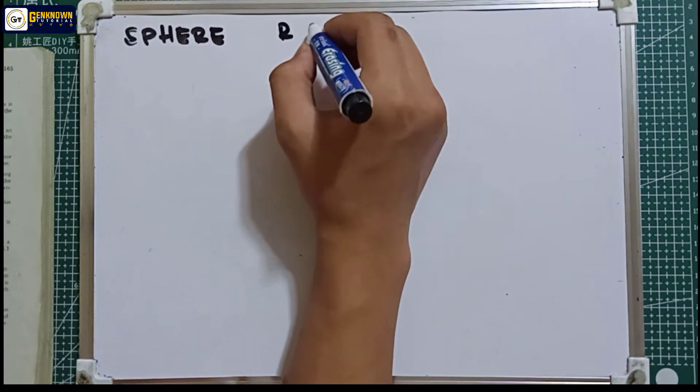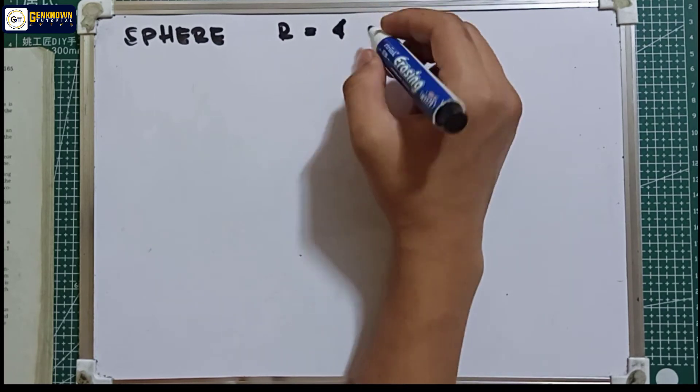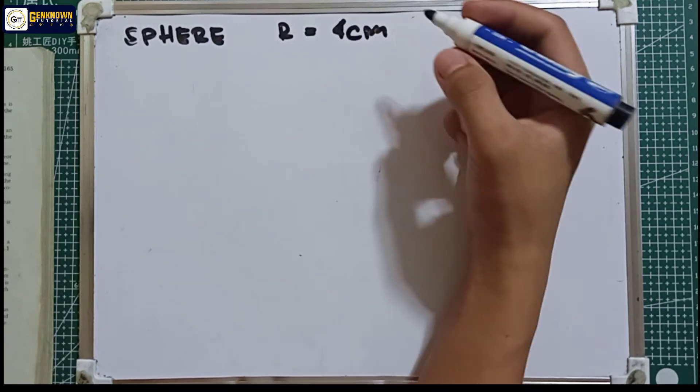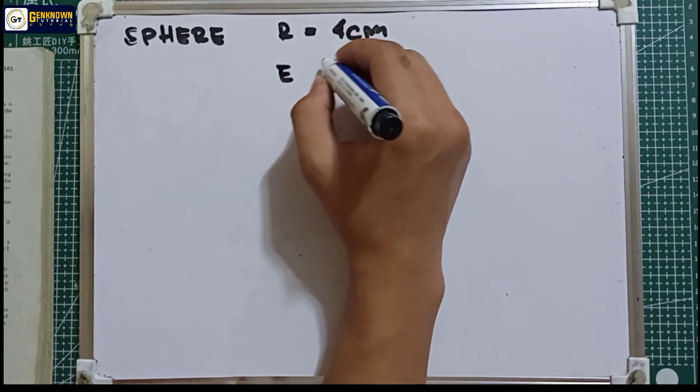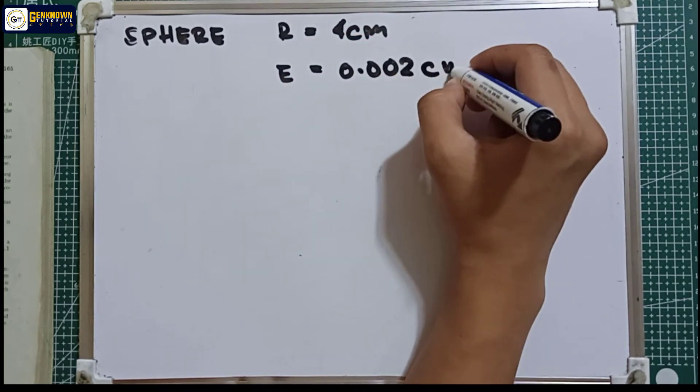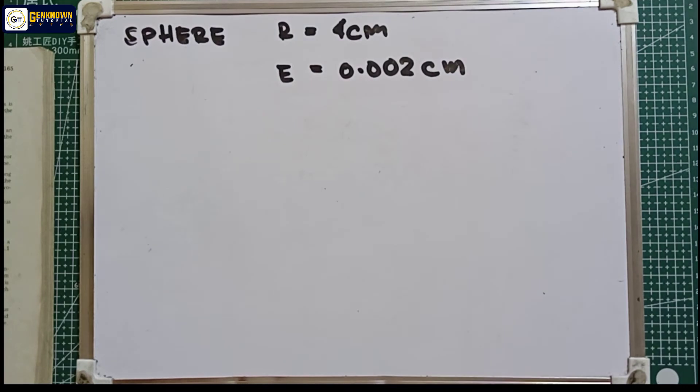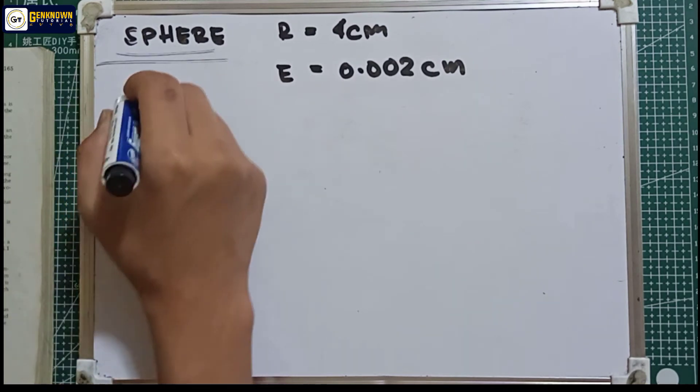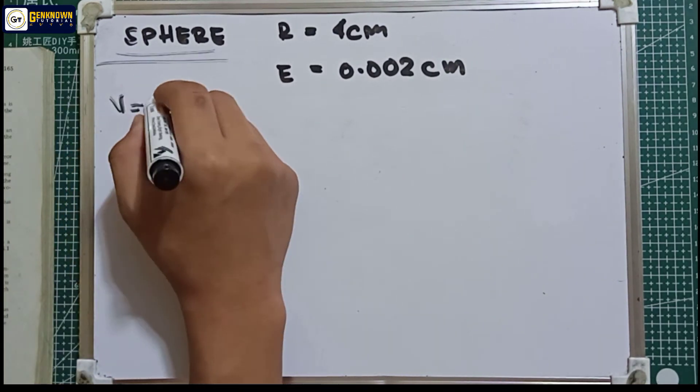Okay, radius is 4 cm and the error is equal to 0.002 cm. Since we're talking about volume, we'll use the volume of the sphere. So volume is equal to 4/3 π r³.